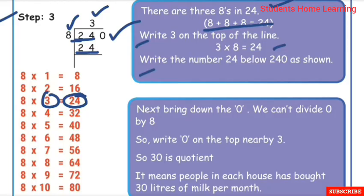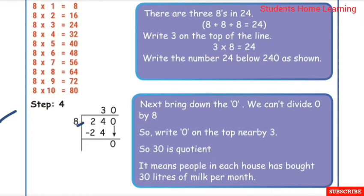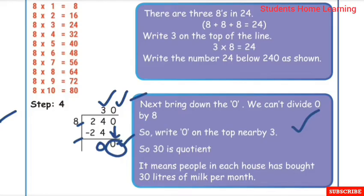Step 4: Bring down the 0. We can't divide 0 by 8, so write 0 on top next to 3. Therefore the quotient is 30. This means each house bought 30 litres of milk per month.